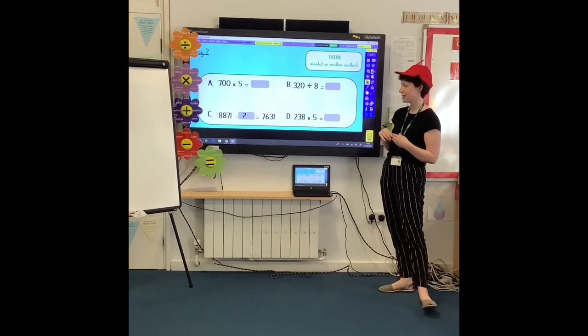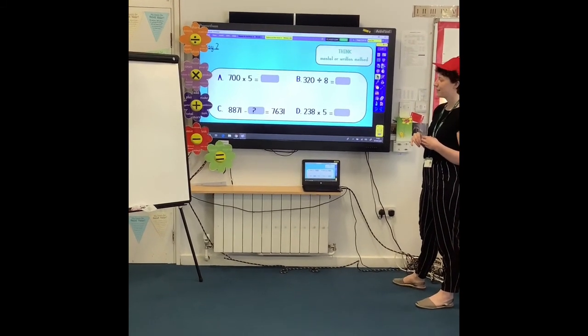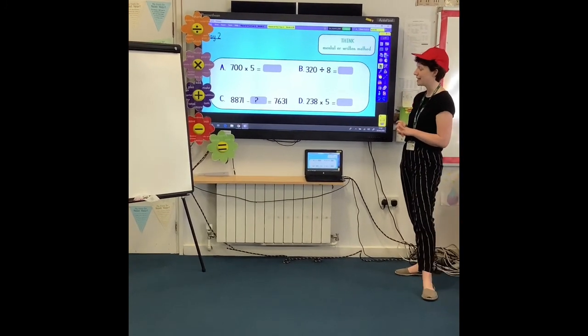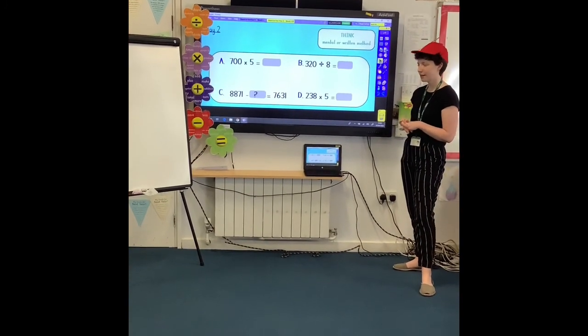B, 320 divided by eight. C, 8,871 take away something is 7,631. And D, 238 times five.